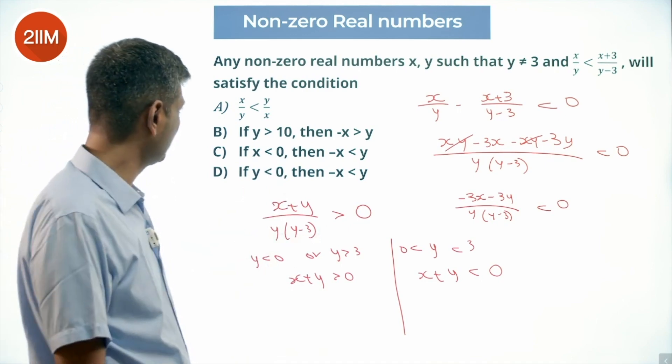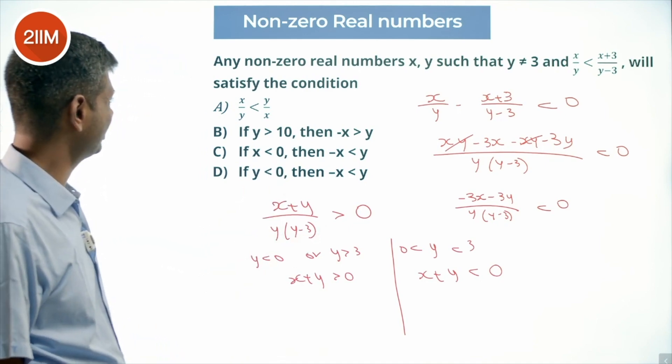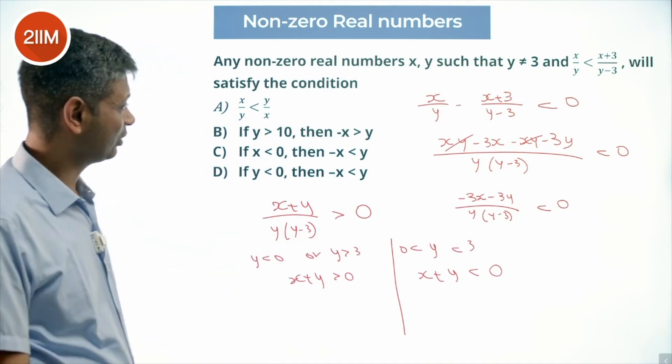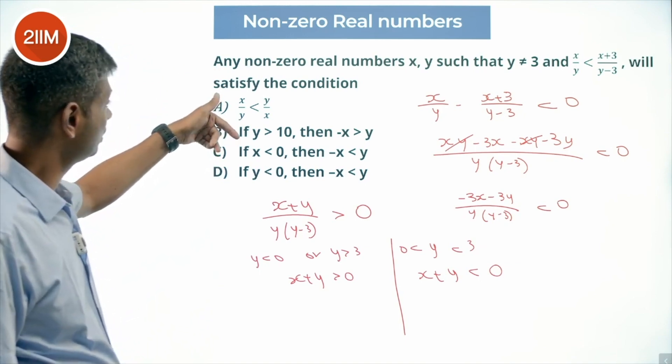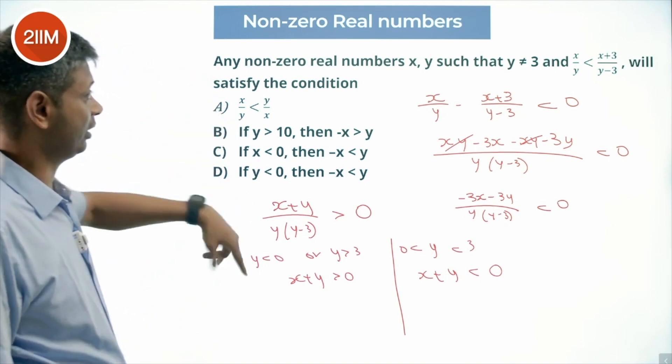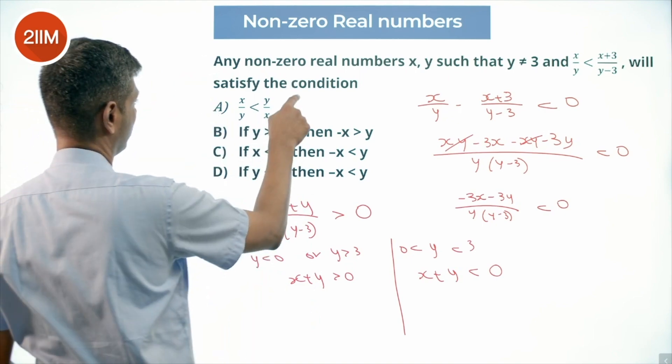Now let's look at the choices. x/y less than y/x not required. I can have a scenario where I said 10/7, x is 10, y is 7, or x is 7, y is 10. Both will hold good, it's not required.